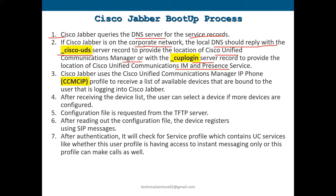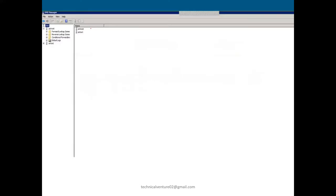If the cisco-uds and cup-login server records are present, Jabber will proceed with all other checks. In cisco-uds you enter all the publisher IPs for all clusters, and in the cup-login server record you add the IM and Presence service. Let me show you how to add these SRV records in DNS.